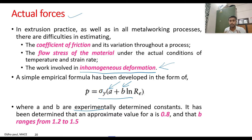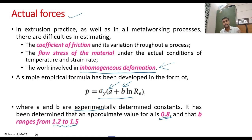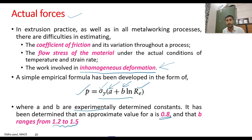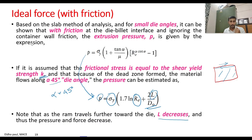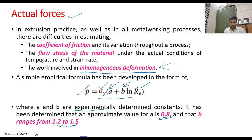From different experiments, the value of a is approximately 0.8 and b is approximately between 1.2 and 1.5. By substituting these values along with the R value and sigma y, we get the pressure required for deformation in the actual case. The pressure in the actual case will of course be greater than in the two ideal conditions.